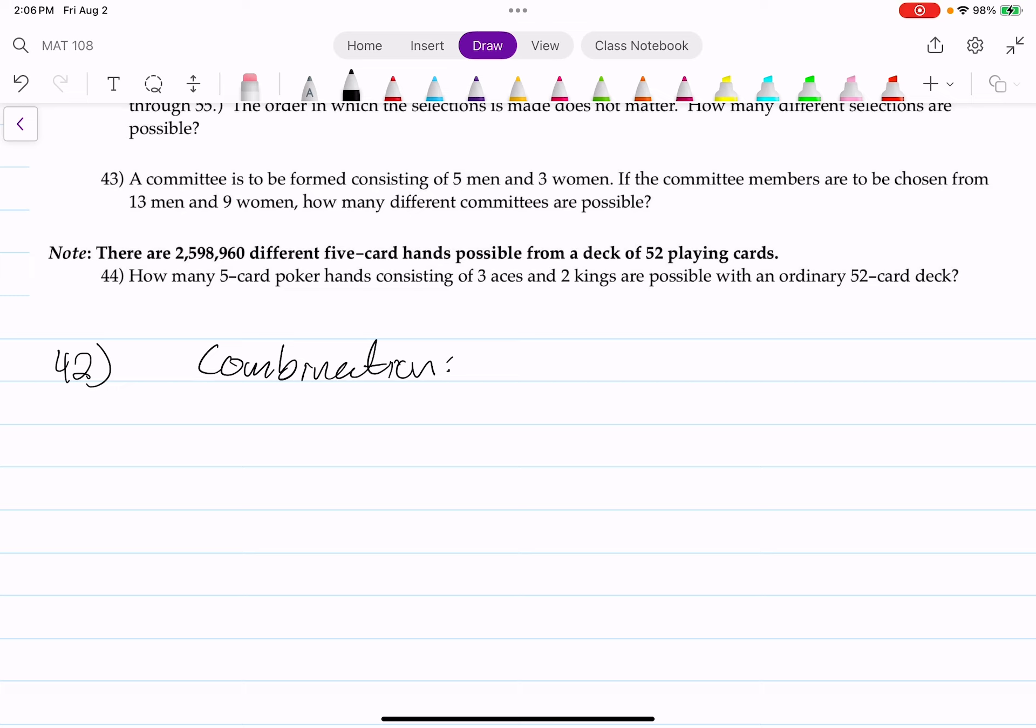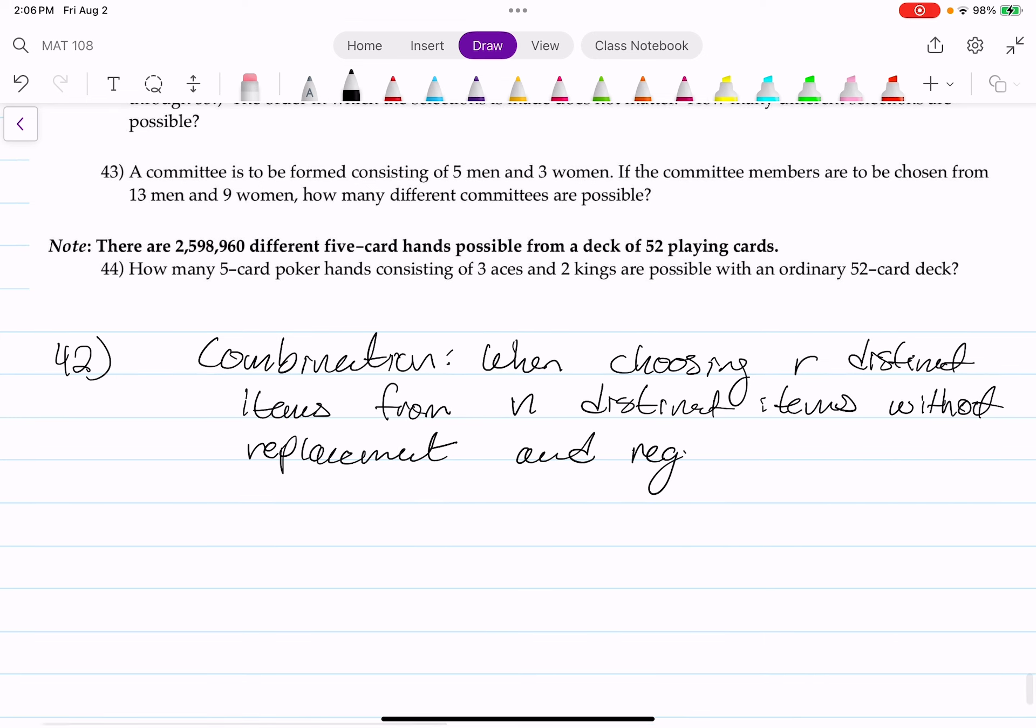And we can say this when choosing r distinct items from n distinct items without replacement and regardless of order, can be computed by the following.